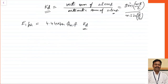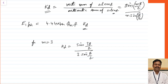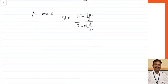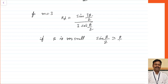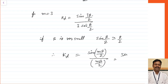Let us see what will be the distribution factor for different harmonic components. If I take the third harmonic component, the distribution factor becomes sin(3β/2) divided by 3·sin(β/2), where beta is the slot angle in electrical degrees. If the value of beta is very small, I can approximate sin(β/2) as β/2 in radians. Therefore, Kd becomes sin(mβ/2) divided by mβ/2, or equivalently sin(σ/2) divided by σ/2, where σ = mβ is the phase spread angle.